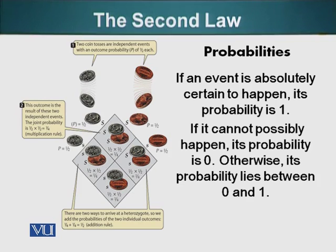If we flip a coin, what is the probability we will get a head or a tail? It's 50%. 50% of the time we will get heads, and 50% of the time we will get a tail.